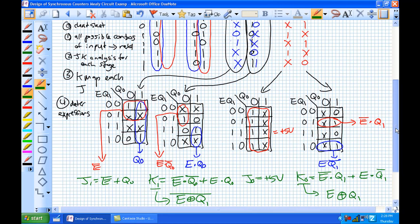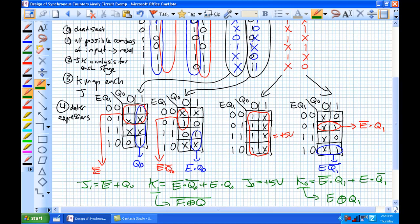So that's basically step 1, 2, 3, and 4. Get your cheat sheet in step 0. Get your cheat sheet, list all possible combinations of input, determine your next. Step 2, do the JK analysis for each stage using your cheat sheet. Step 3, K-map each J and K input. Number 4, determine expressions.